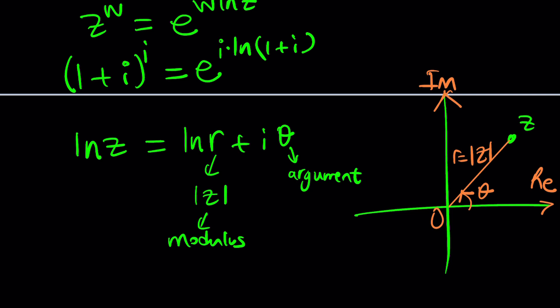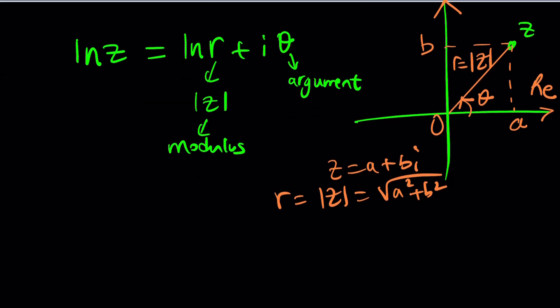So how do you find theta? And how do you find r? r is easy from Pythagorean theorem. If you think about it, this is going to be the real part and this is going to be the imaginary part. So in other words, we're saying that z can be written as a plus bi. So absolute value of z, which is r, is going to be the square root of a squared plus b squared. So that's how you find the absolute value. To find the argument, you might as well just plot the number.